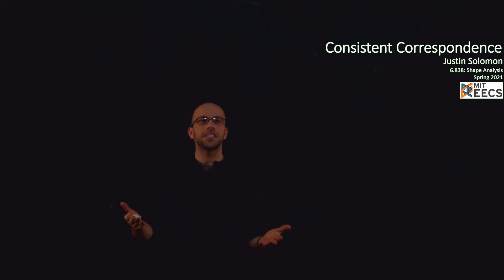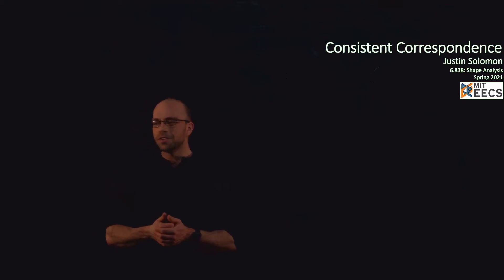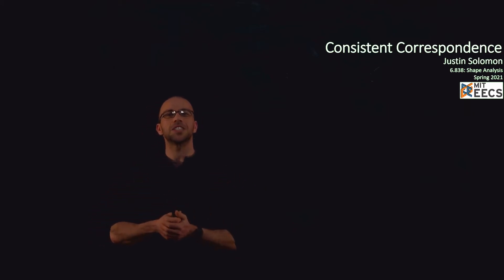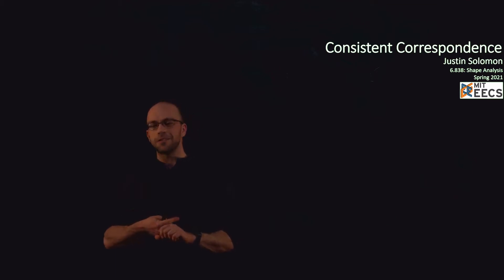Hello everybody, and welcome to another lecture of 6.838. Today we're going to continue our consideration of correspondence problems. Our basic task is to lift our consideration from just a pair of shapes at a time to entire collections. The idea is that if I compute pairwise maps between many different shapes, in addition to finding maps that minimize distortion, I can talk about compositionality — and in particular, I might ask that composing maps in a cycle gives something that looks like the identity matrix. That condition, which we'll call consistency, is a really valuable way to judge a collection of maps, to regularize map computation, and to fix outliers when something has gone wrong.